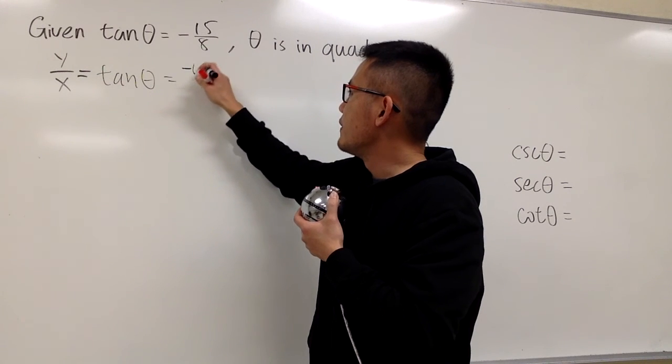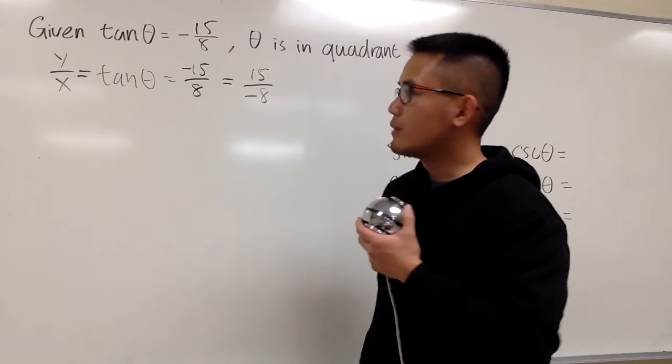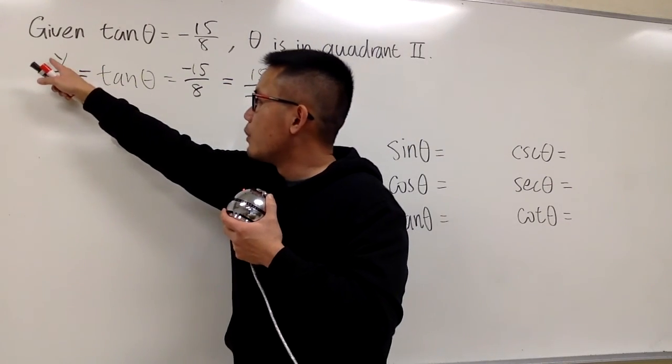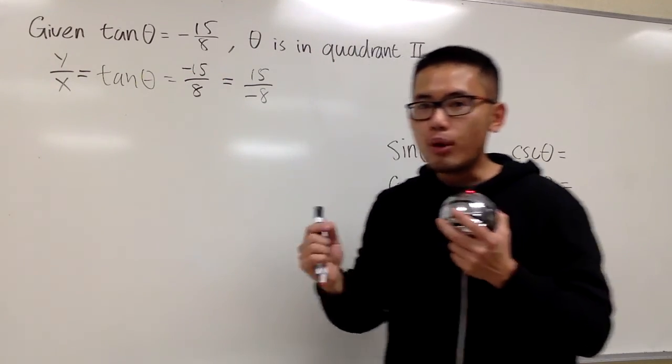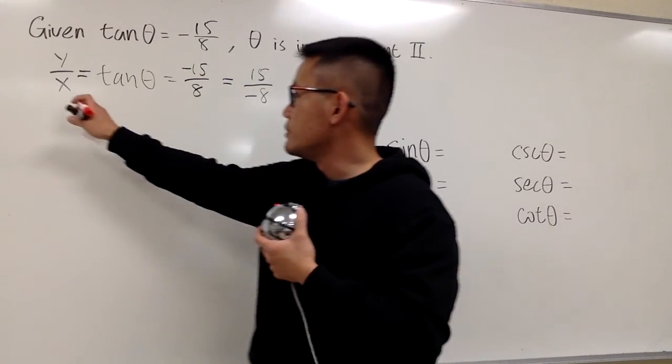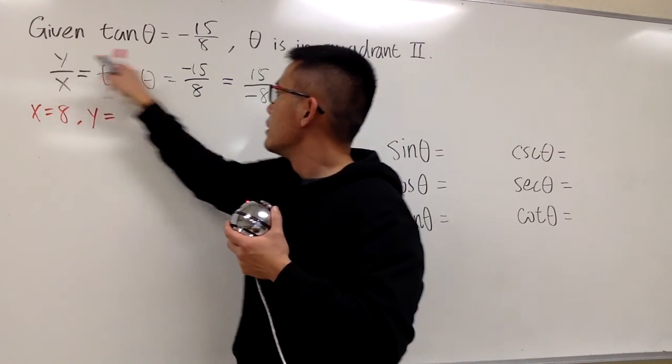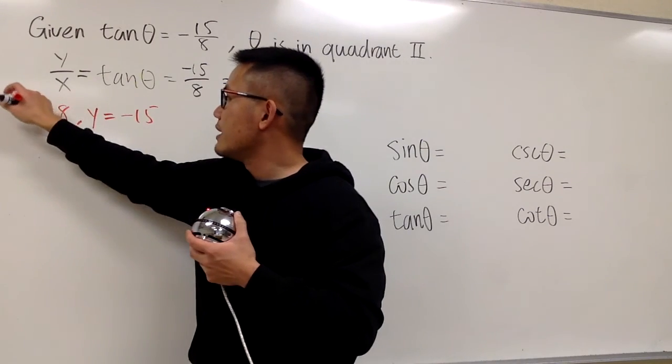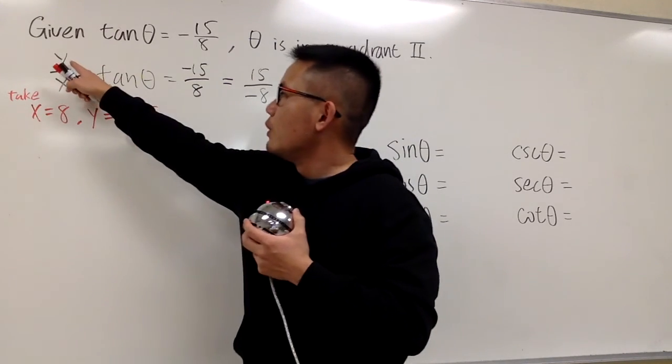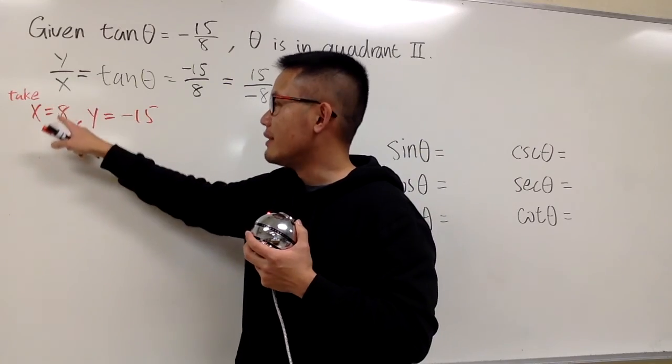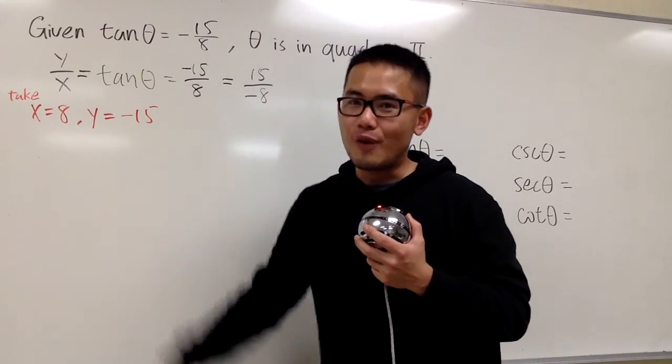So we can look at this as negative 15 over positive 8, or positive 15 over negative 8. In the first situation, we are talking about y being negative 15, x being positive 8. We can just take that as the point on the terminal side. And let's see what do we get. So let me just say the first case is x equals to positive 8, and y equals to negative 15. And as I said, I'm just taking this as one of a choice of x and y. Of course, you can say y is negative 30 and x is positive 16. Reduce that, you still get this. But keep it simple, this form fraction is the best.